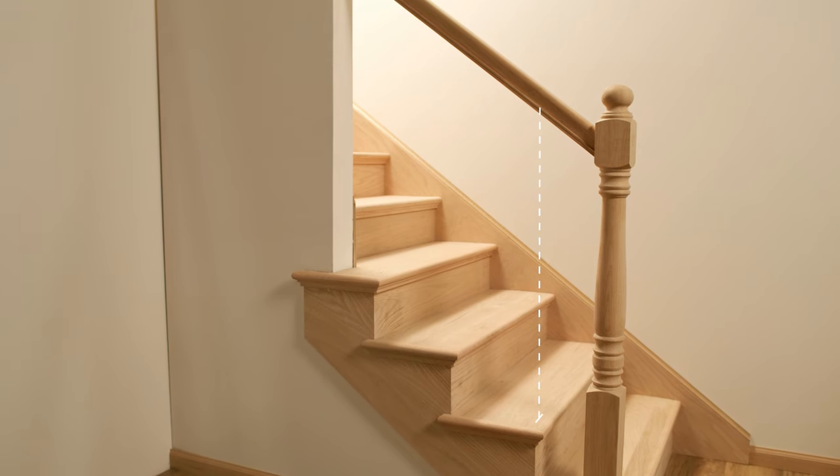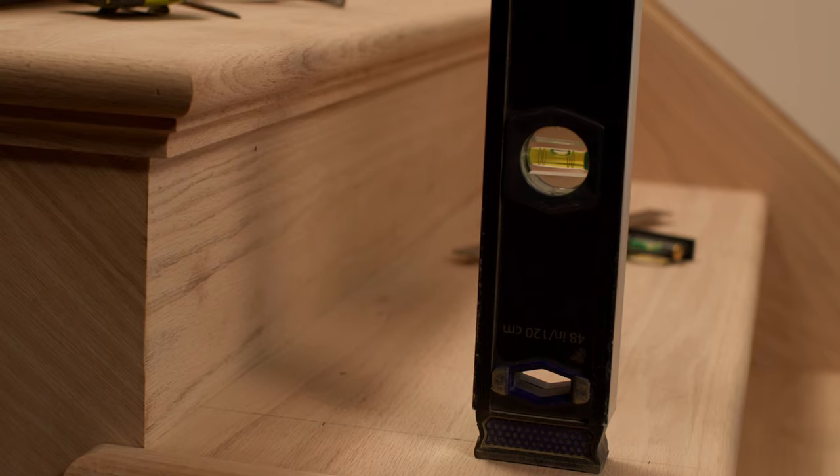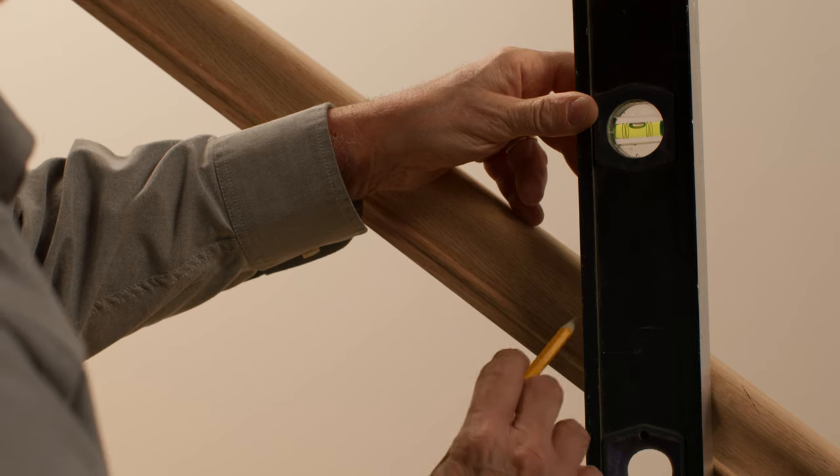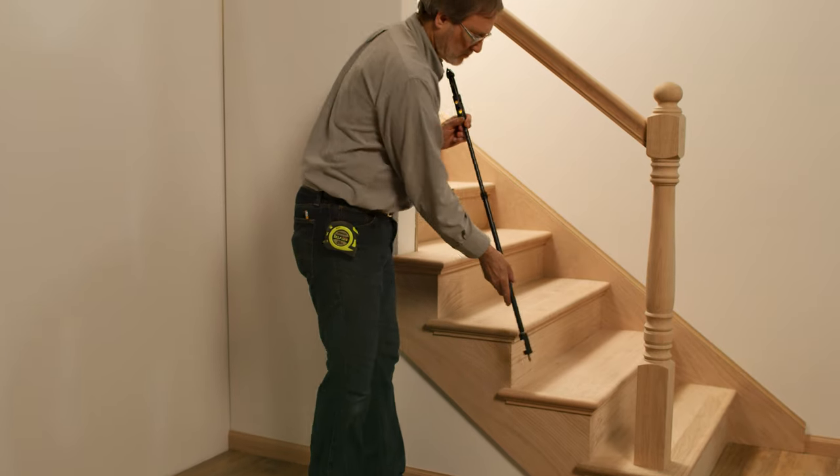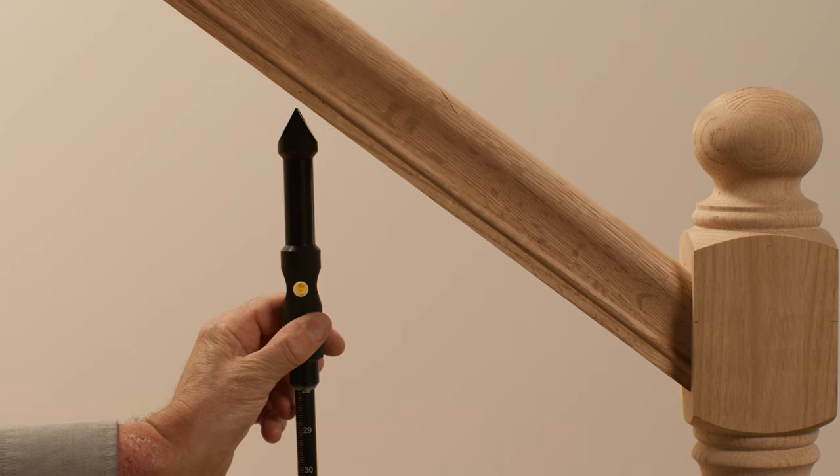Transfer the baluster locations to the handrail. There are two ways to do this: using a four foot level, or using our baluster telescoping marking tool.